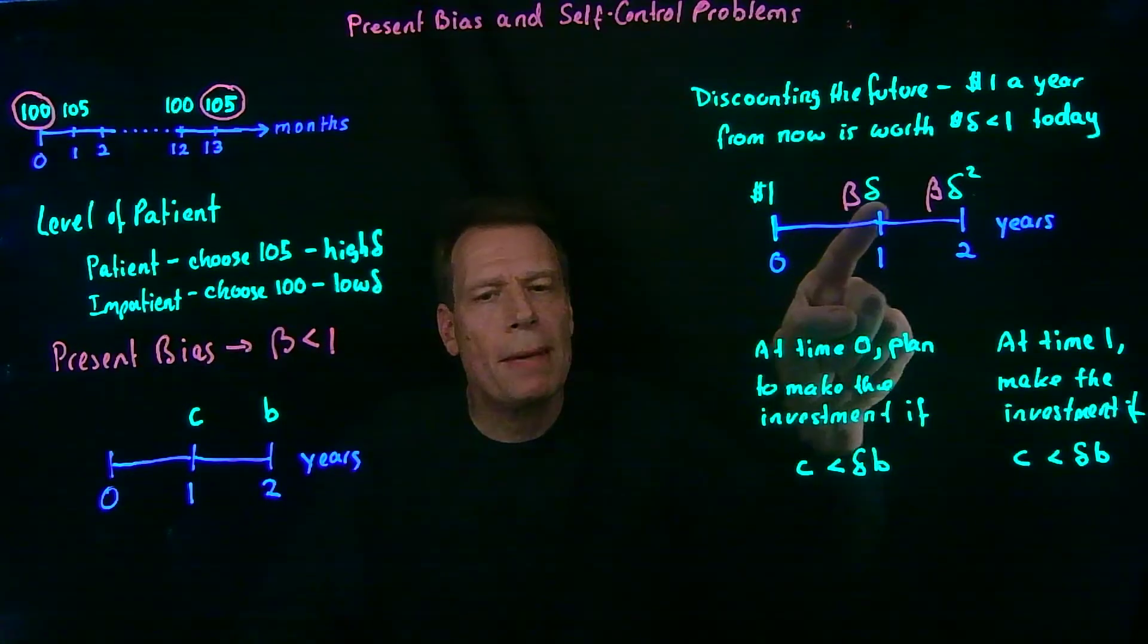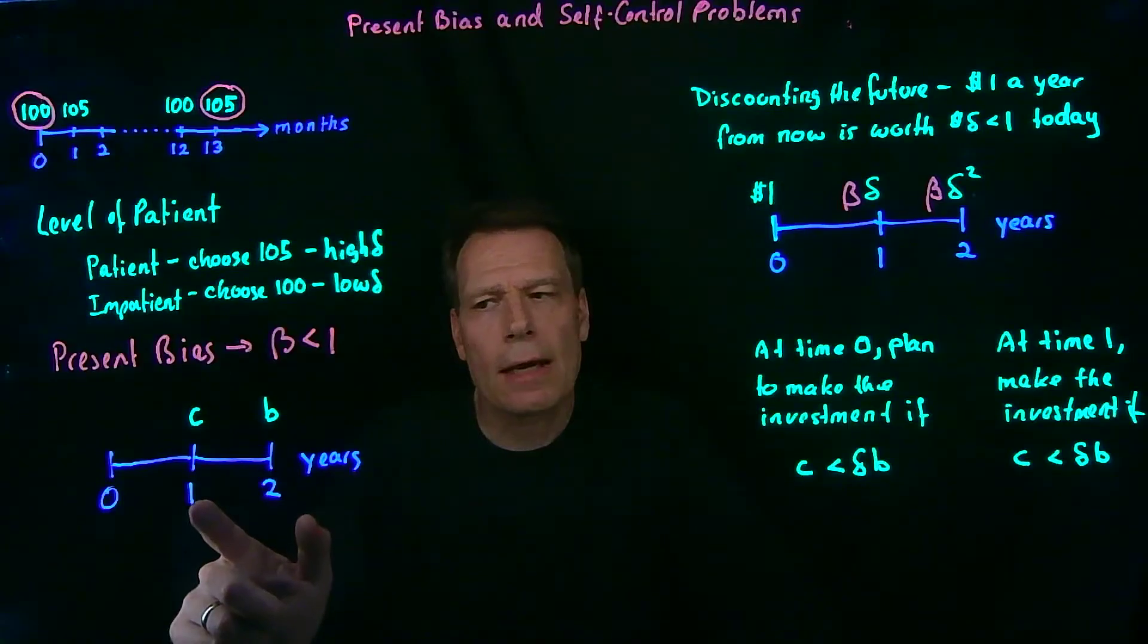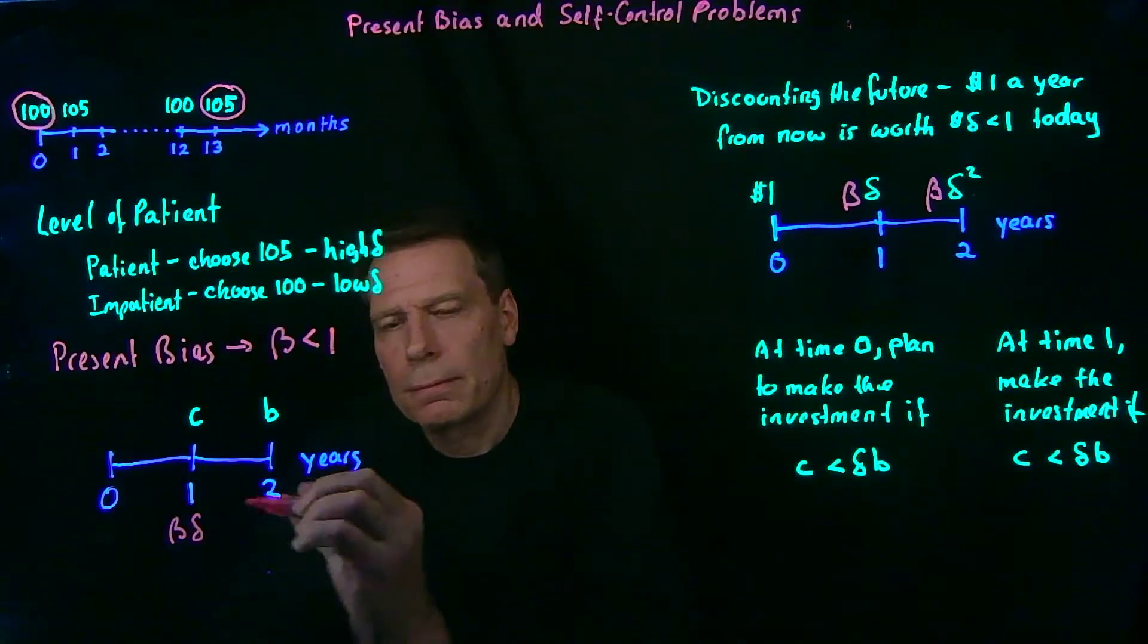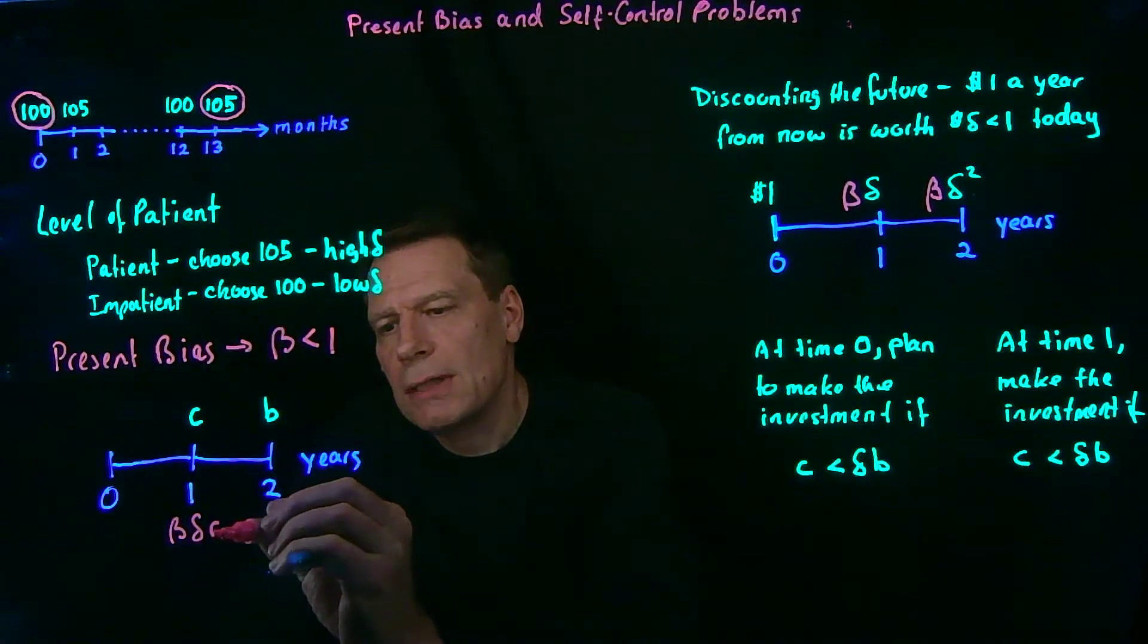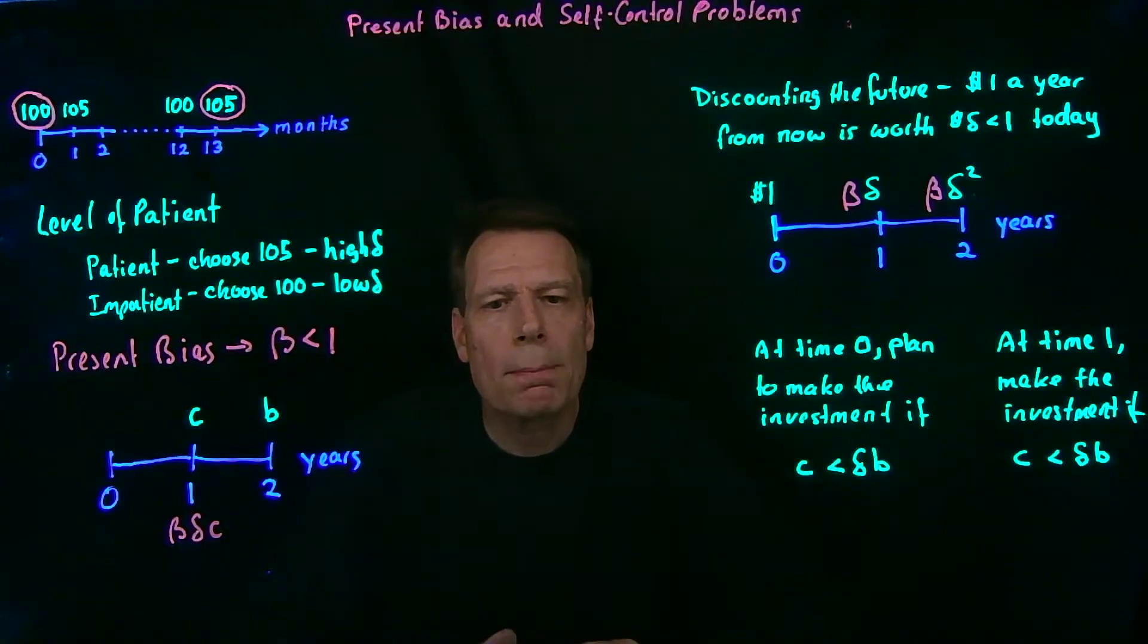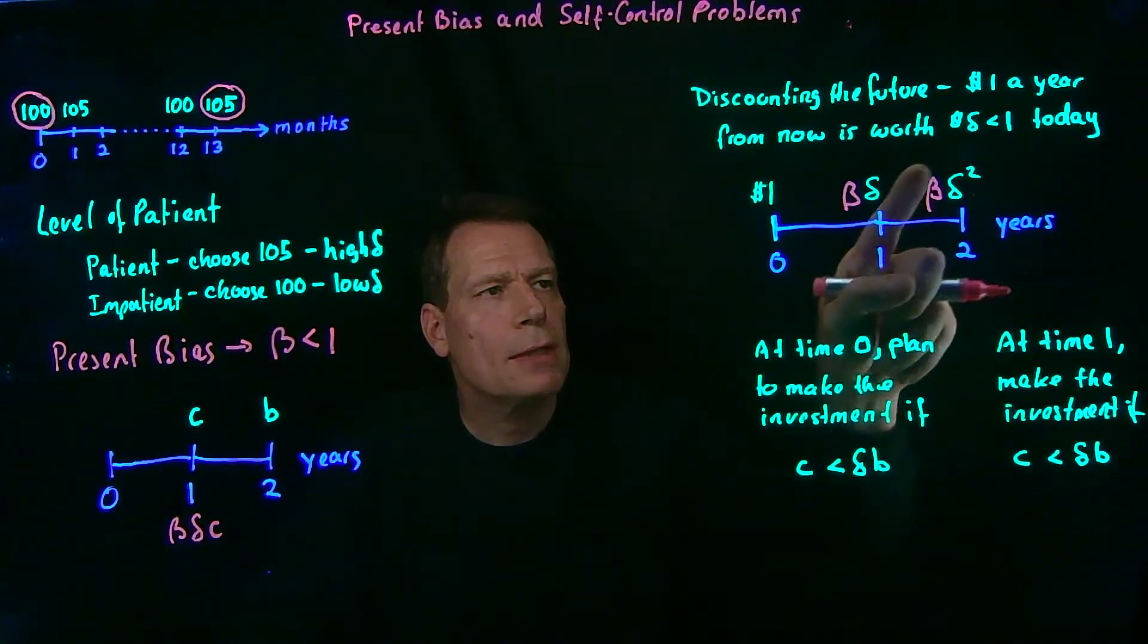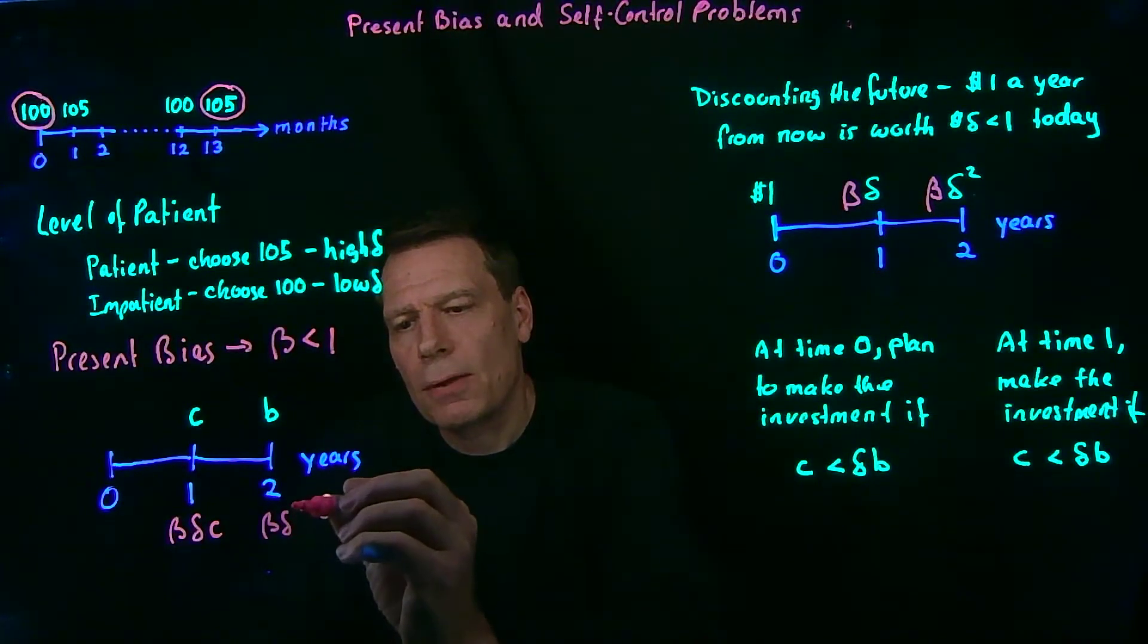So we have to discount it by the discount rate that applies for one year from now. Well, that is now beta delta. So when we think about what's the present discounted value of that cost, it would now be beta delta c. What would be the present discounted value of the benefit two years from now? Well, we have to discount by this. So that would be beta delta squared times b.